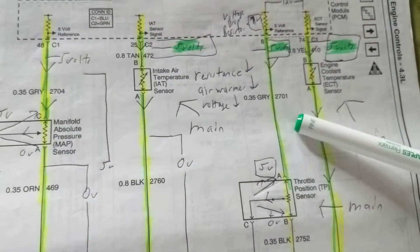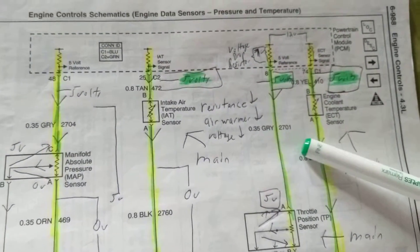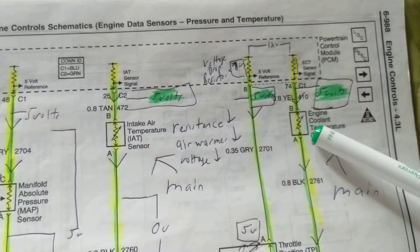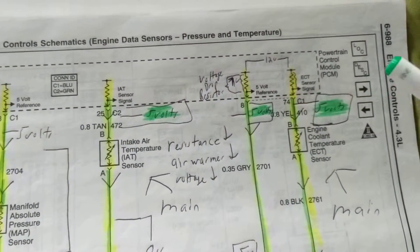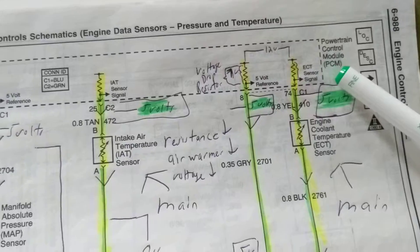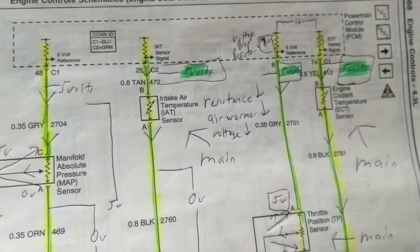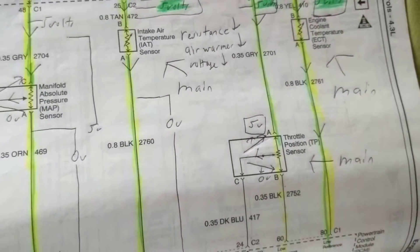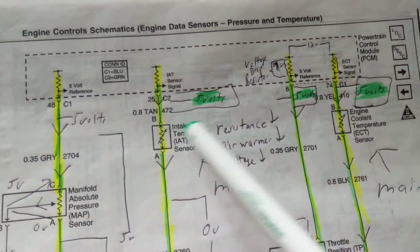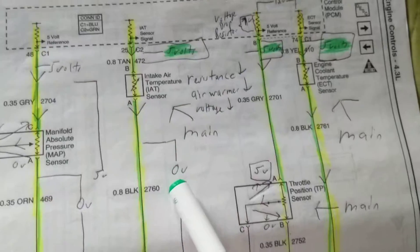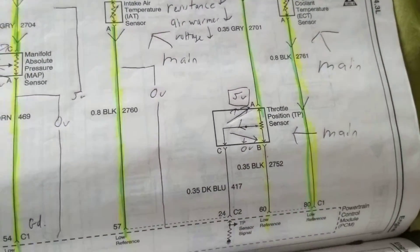The PCM is the powertrain control module - that's the computer, the brain of the automotive. Just like the heart, this is the brain and it controls air-fuel ratio.